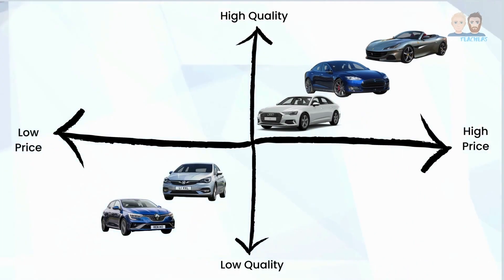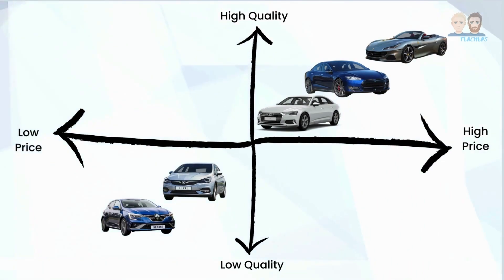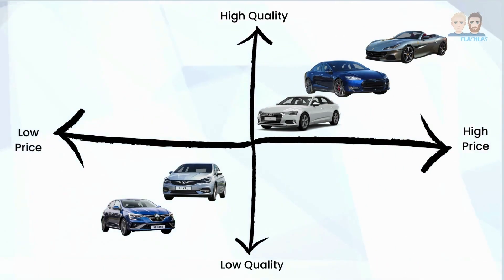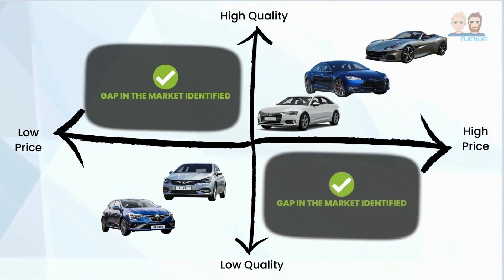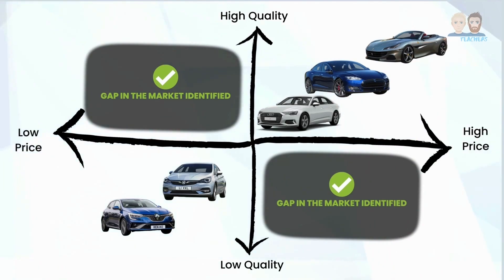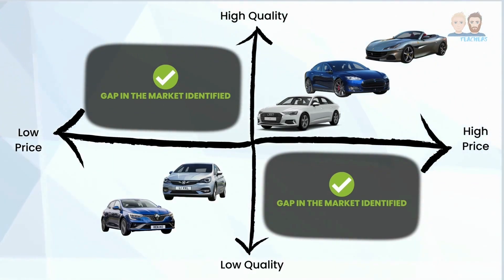Now imagine if the car industry only consisted of these five different car brands and you had just completed the market mapping process — what have you been able to identify as a result? You've most likely been able to identify that there are clear gaps in the market for cars which offer high quality at a low price as well as low quality and a high price, as there are no competitors currently mapped into these areas. However, to produce and sell high quality cars at a low price might not be a profitable or sustainable business model, while selling low quality cars for a high price is likely to result in very low customer demand.